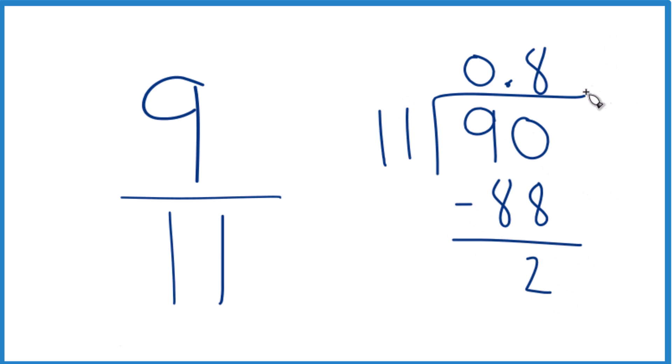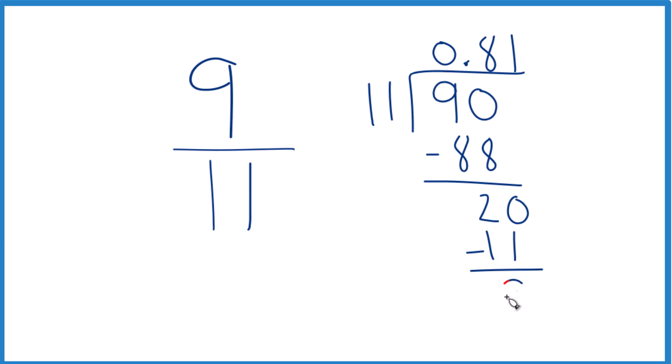11 won't go into 2 so we'll move over 1 and call it 20. 1 times 11 that's 11 and we're left with 9.